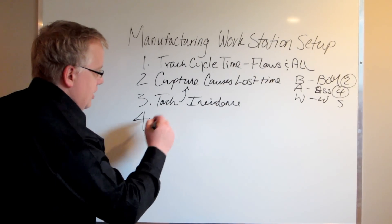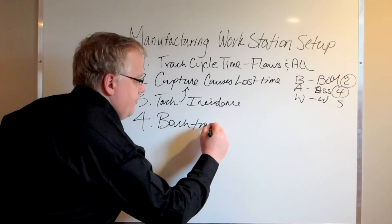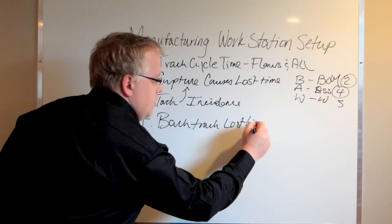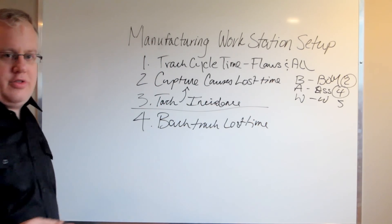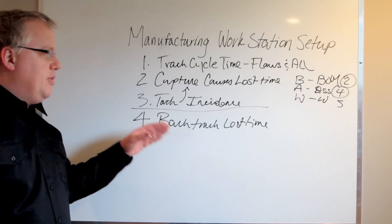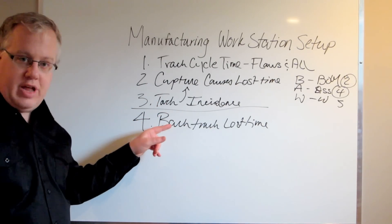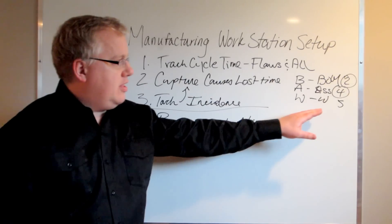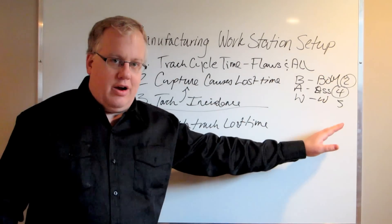The fourth step is to backtrack lost time. Up to this third step right here, this may take several days. What I typically do is I may spend a week in a given manufacturing workstation before I get to the fourth step. What I want to do is isolate the high causes of lost time. In the fourth step, I want to eliminate them entirely.